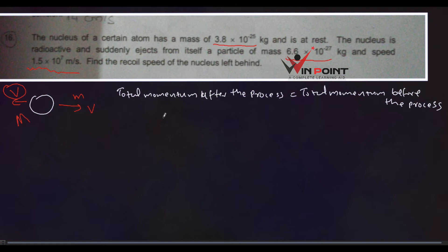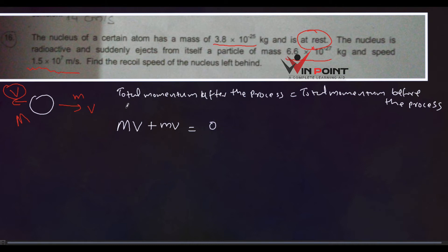We need to find the momentum of the nucleus and the momentum of the particle. Momentum of nucleus is MV, momentum of particle is mv. Before the process, the nucleus was at rest, so the total momentum before is zero — if an object is at rest, its momentum is zero.